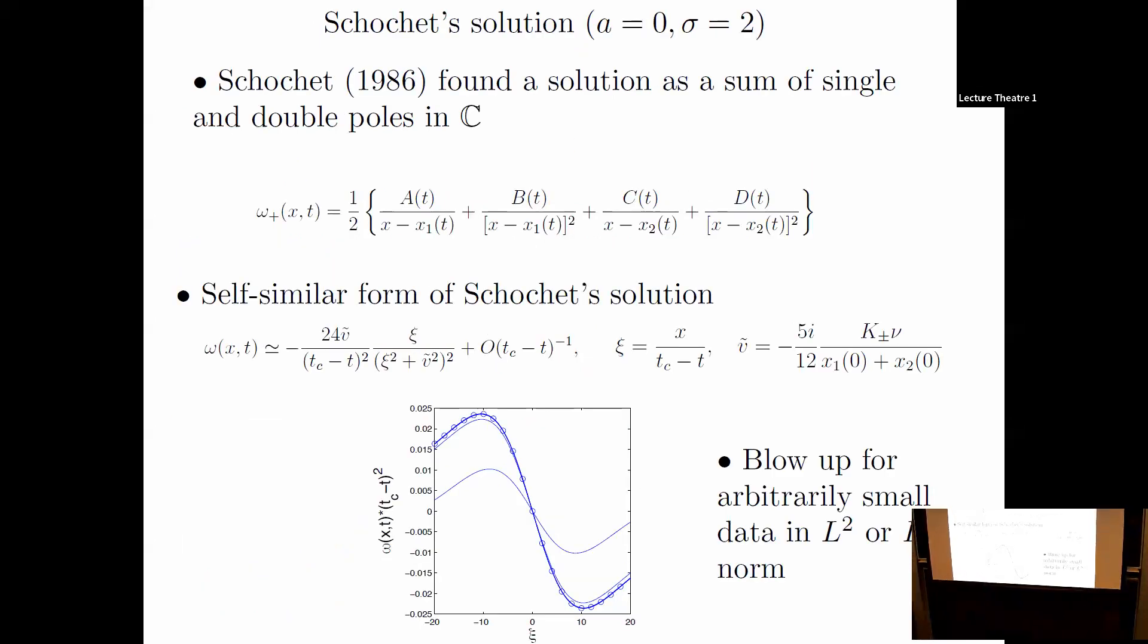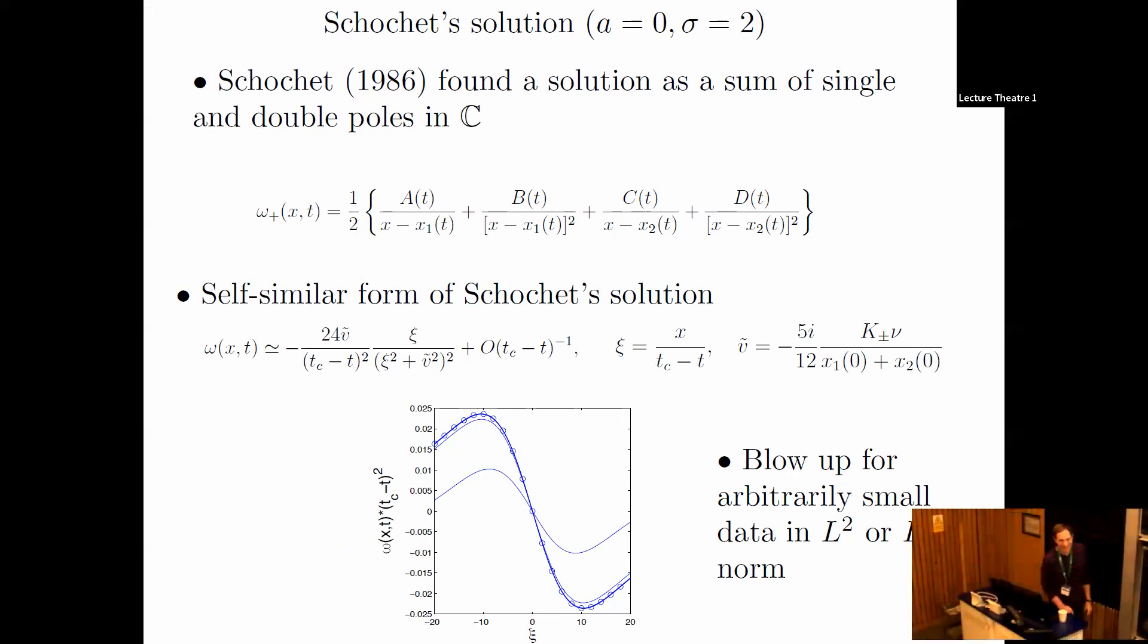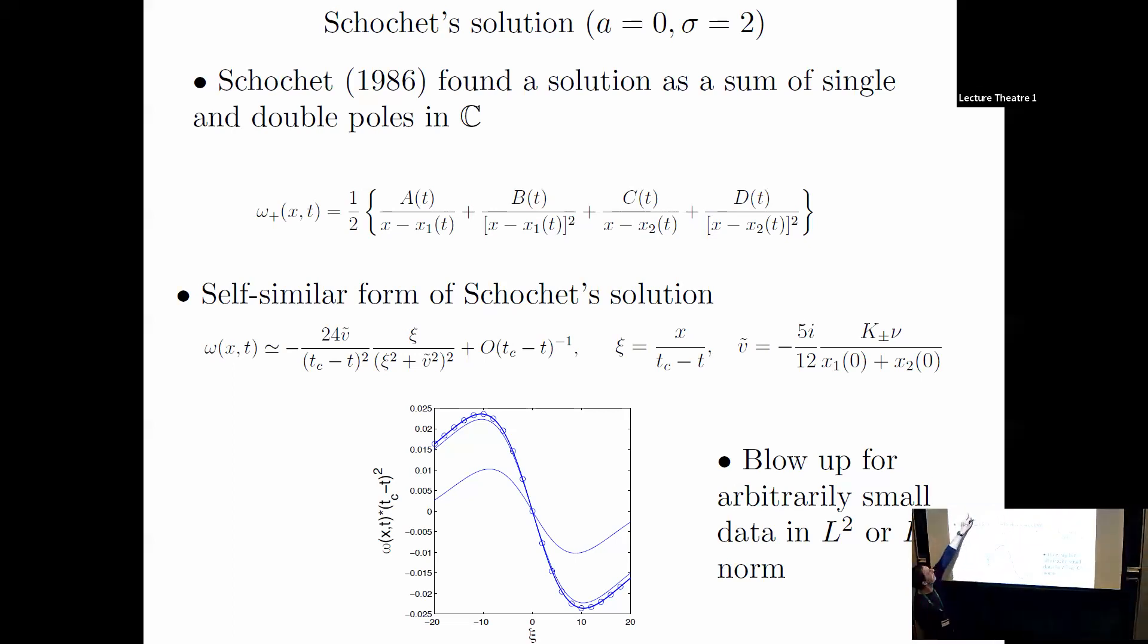Here's another one. This wasn't ours, but I really like it. This is the only other pole dynamic solution of a dissipative problem. It's Chauchet's solution. We've ramped up the dissipation here to sigma equals two. Chauchet writes his solution as a sum of single and double poles. This is the upper analytic part with poles in the lower half plane; there's a part with poles in the upper half plane, completely symmetric.